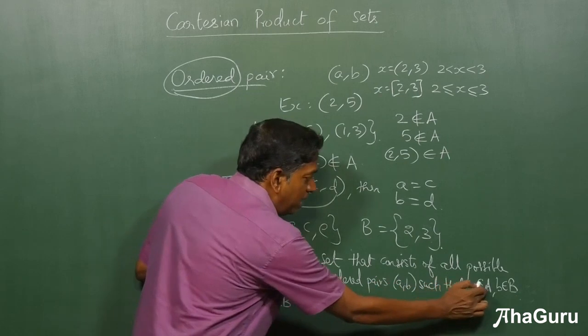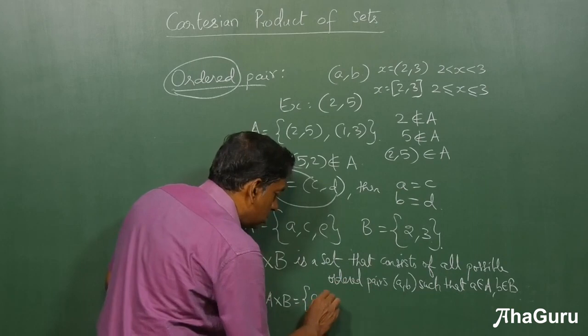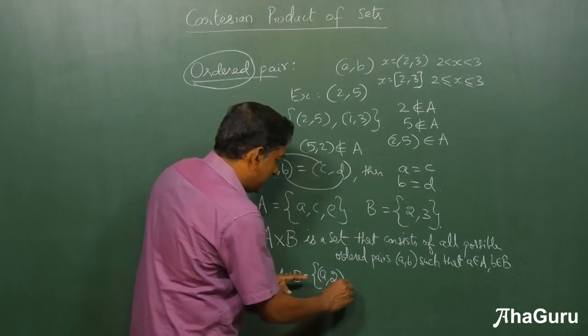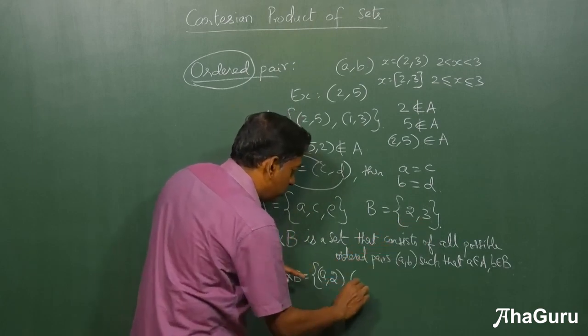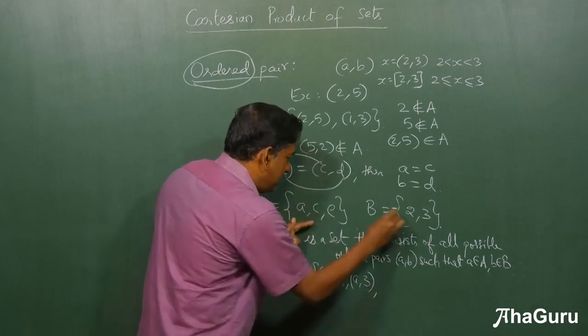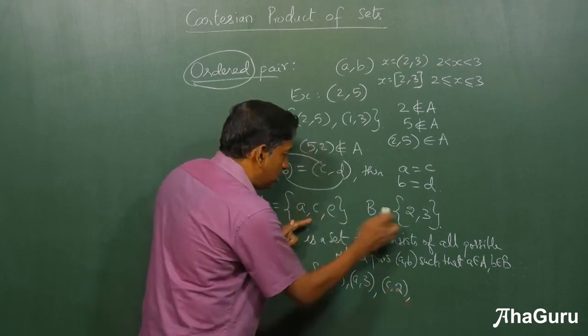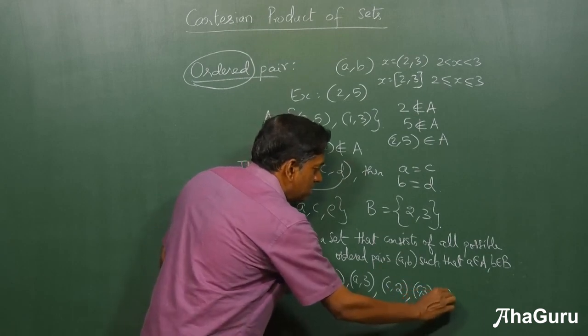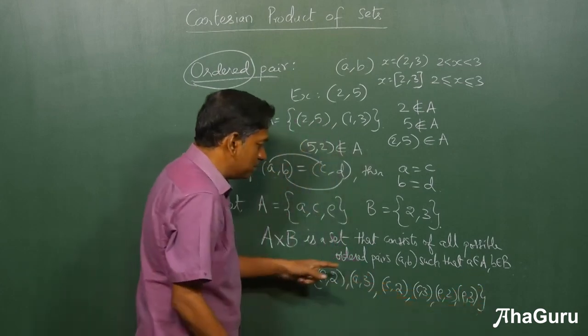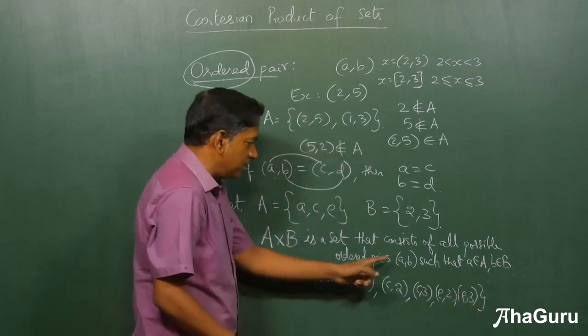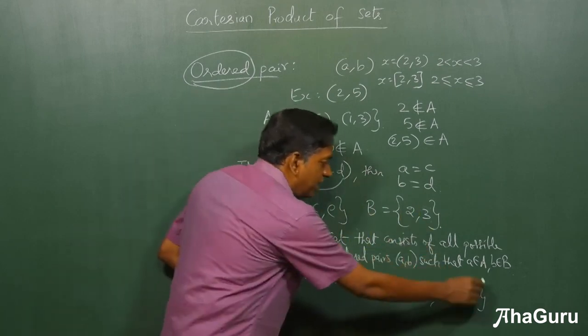(a,b) such that a belongs to first set, b belongs to second set. So, (a,2), next (a,3), then (c,2), (c,3), (e,2), (e,3). We simply write all the possible combinations. Every possible ordered pair such that first element is in set A and second element is in set B is part of A cross B.